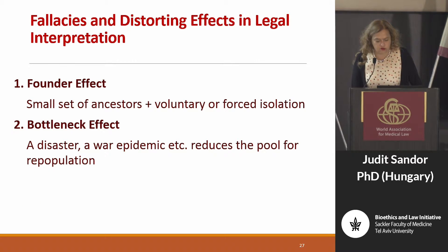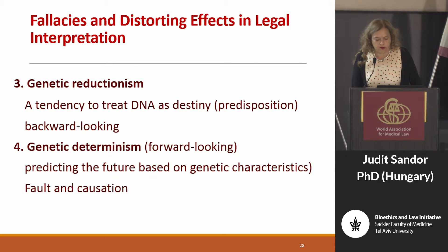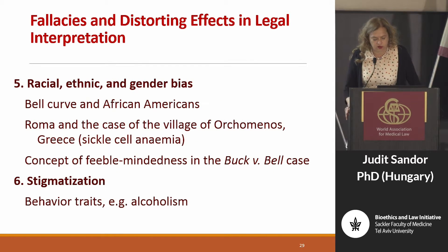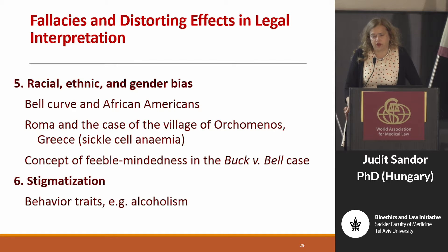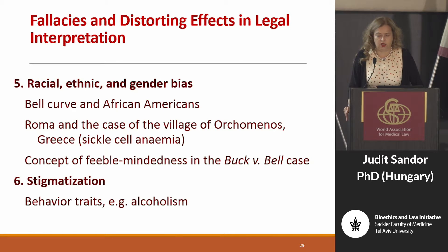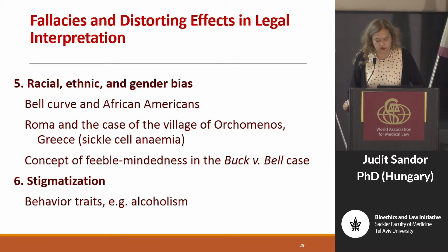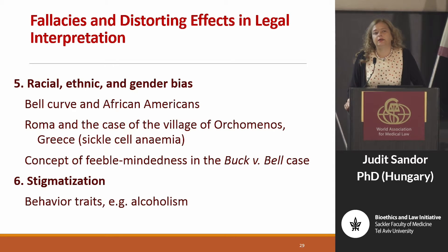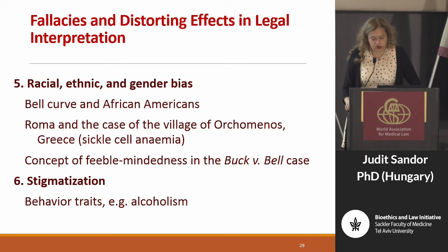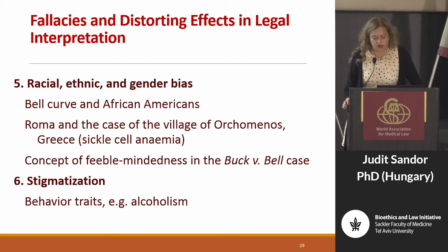To mention one interesting example of genetic reductionism and racial bias: the Orchomenos case in Greece found that the Roma population did not develop sickle cell anemia, which was initially linked to racial identity. It turned out it was related to geographical history — there had been a large lake that dried out, and because malaria was prominent in that area, the local population had developed resistance. The later-arriving Roma population had not, so it was neither a gender nor a racial component.